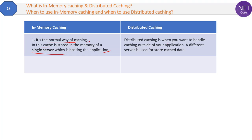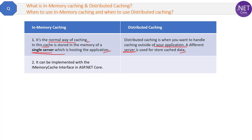Distributed caching is when you want to handle caching outside of your application — a different server is used to store cache data. So in in-memory caching we use a single server for both hosting the application and storing the cache, but in distributed caching we use a different server for storing the cache data. This is the main difference.